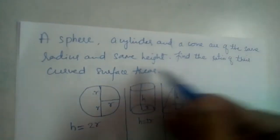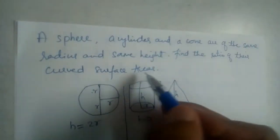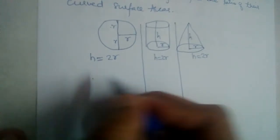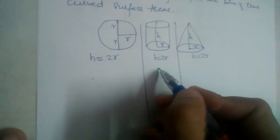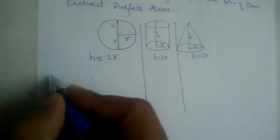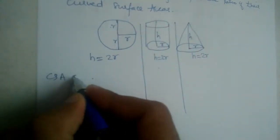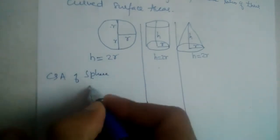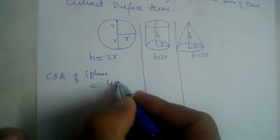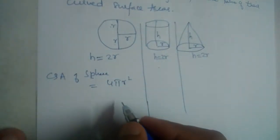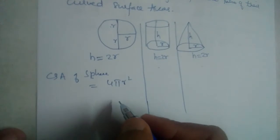Find the ratio of their curved surface areas. We need to find the curved surface area of each and then divide them. Curved surface area of sphere first: it is 4πR².